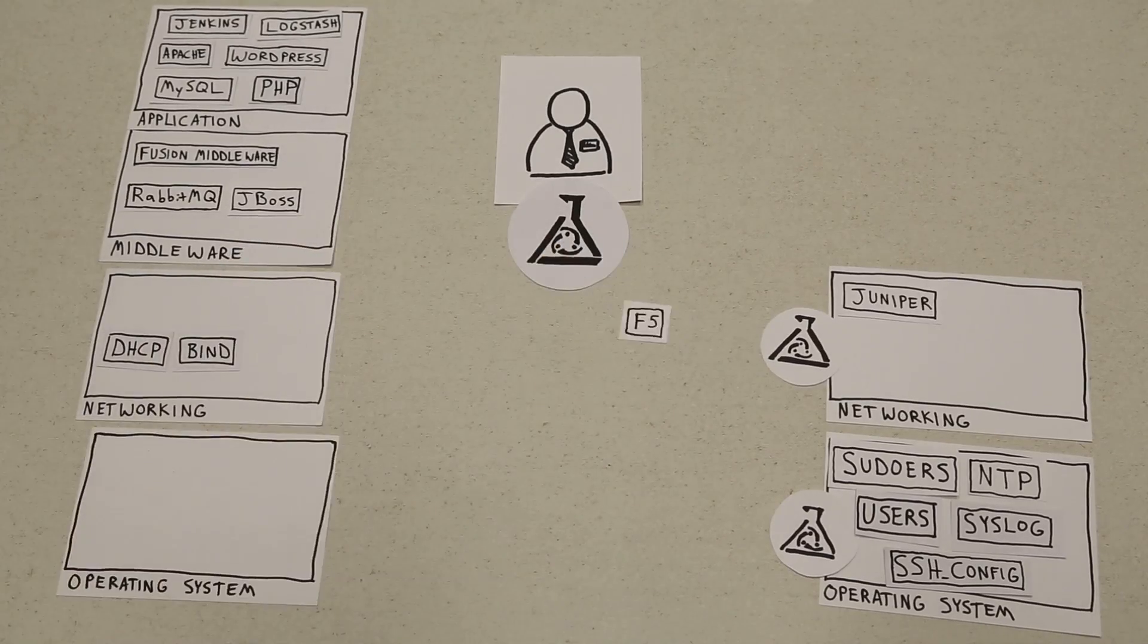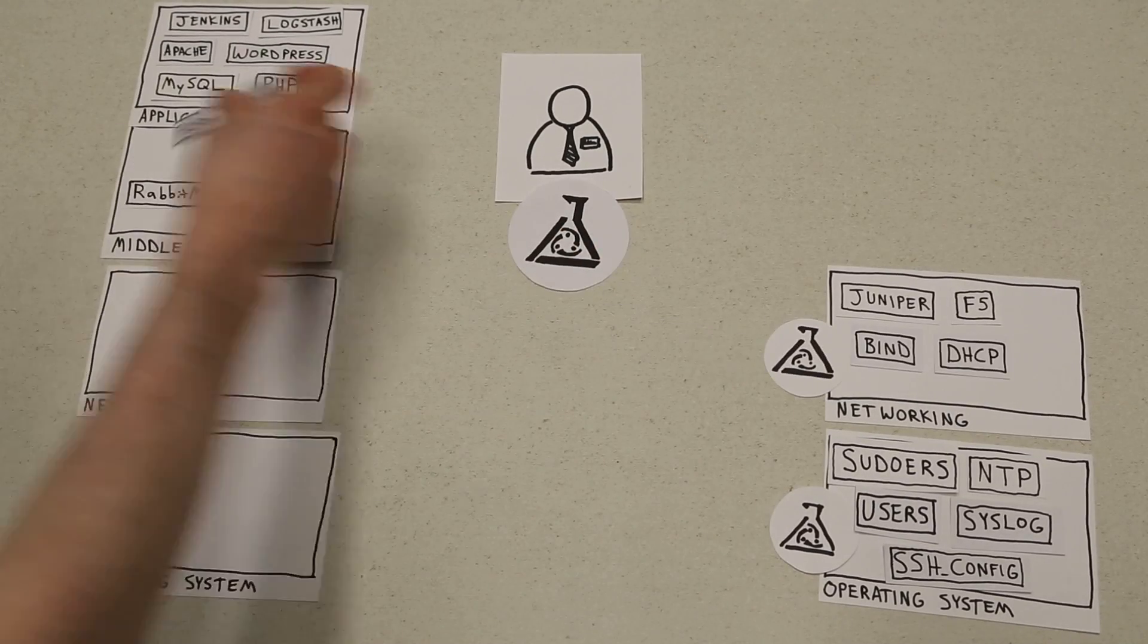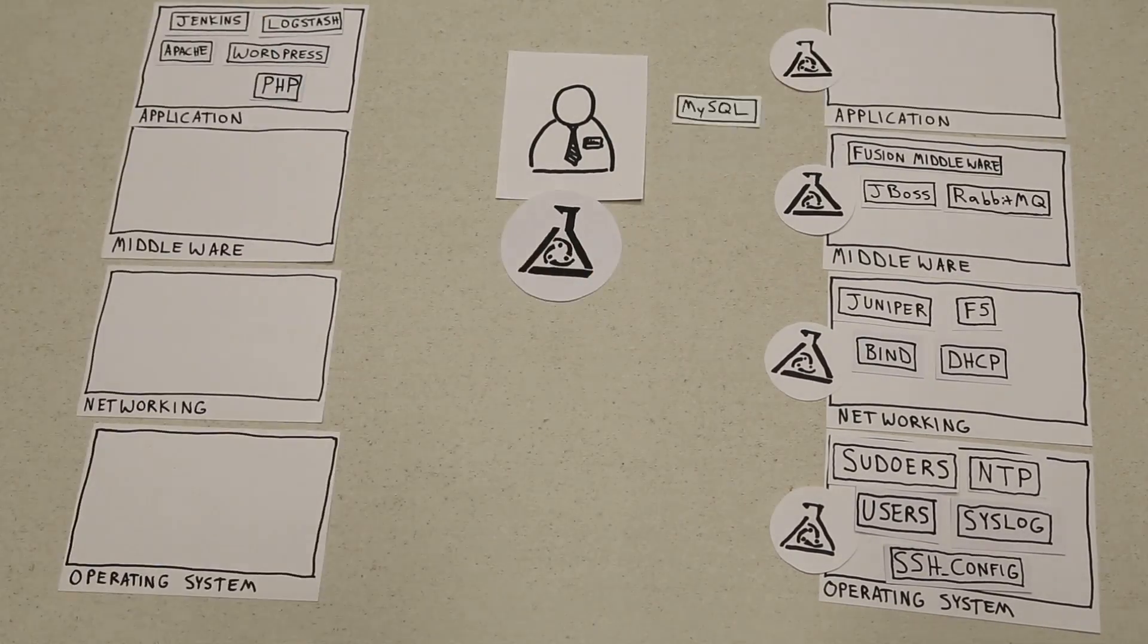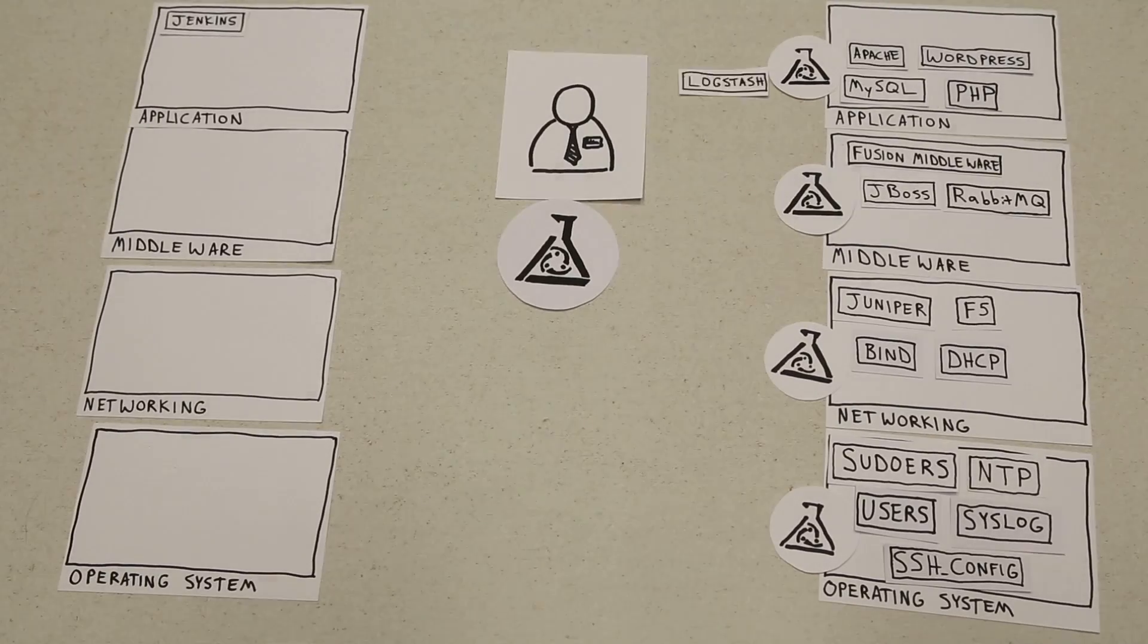He can start with the operating system layer, then move up to the network layer, the middleware layer, and all the way up to the application layer until he has a fully automated infrastructure.